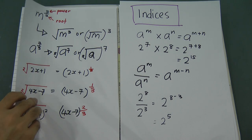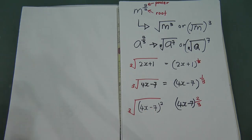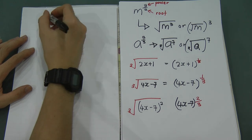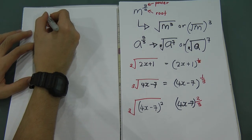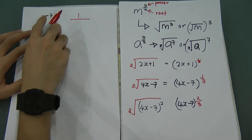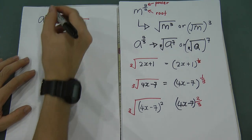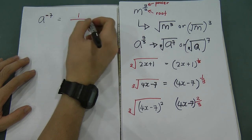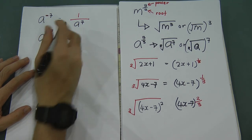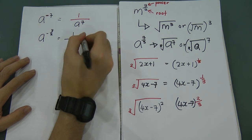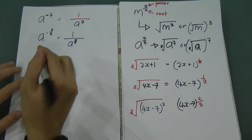Now, what happens when you see a negative in your exponent? When you see a negative power, it means 1 over. So a to the power of negative 7 means 1 over a to the power of 7. And a to the power of negative 3 over 2 means 1 over a to the power of 3 over 2.